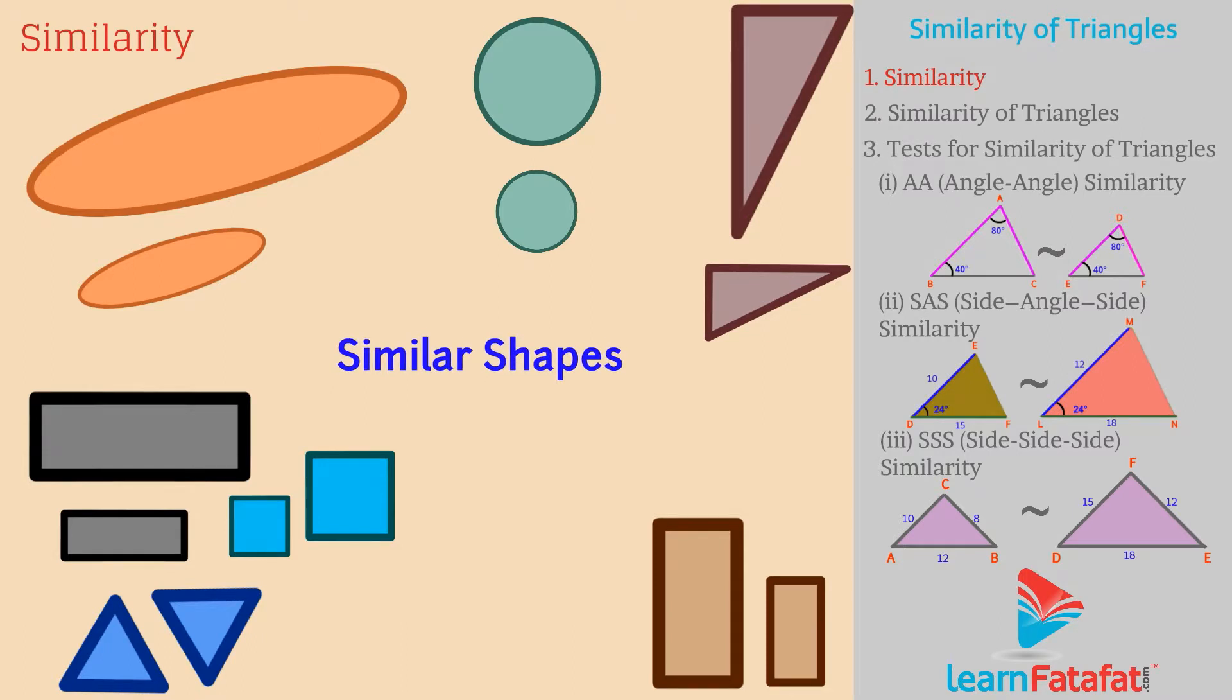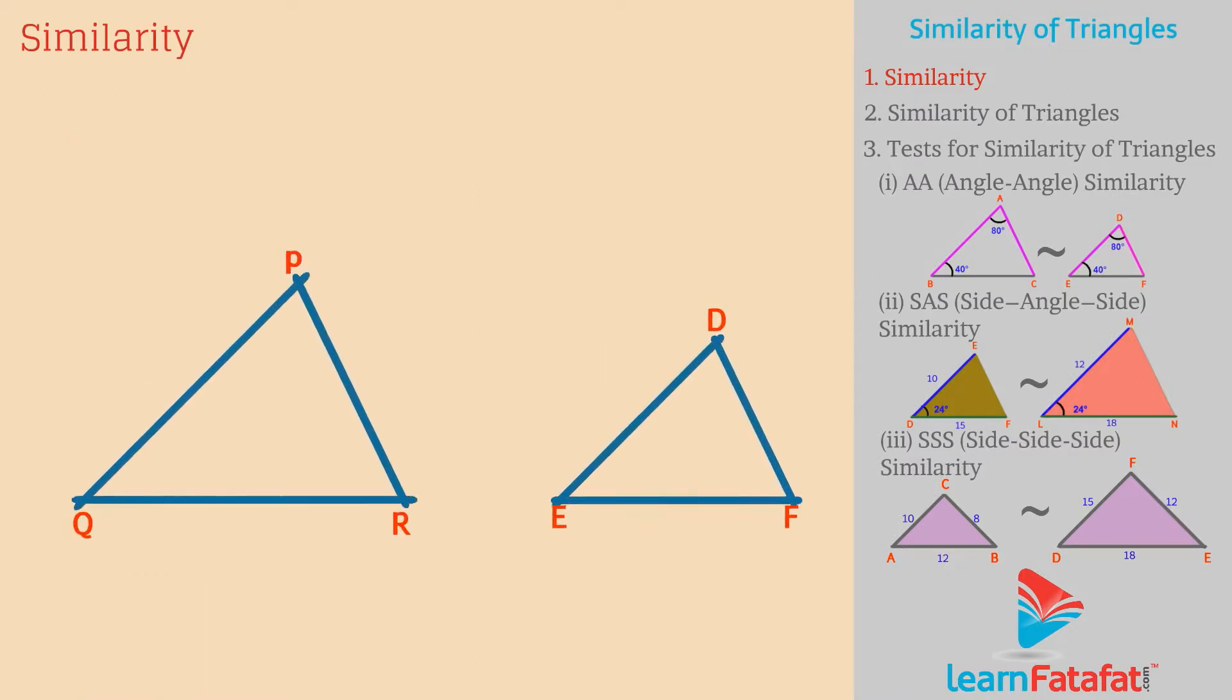The shapes which look alike are called similar shapes. Similarity means things having same shape, not necessarily the same area.